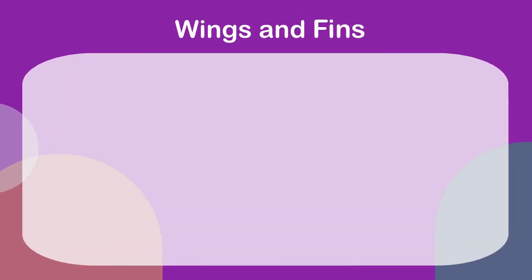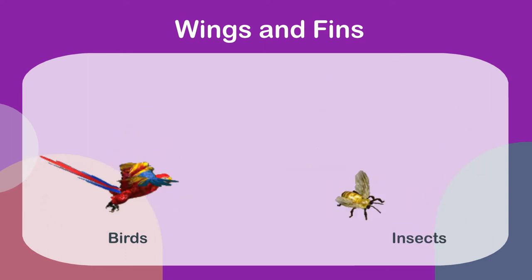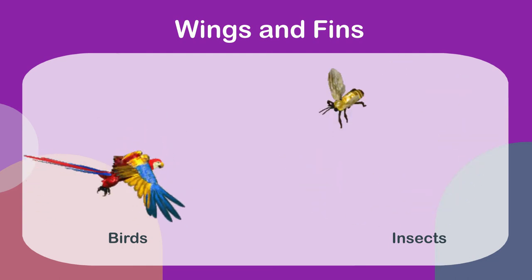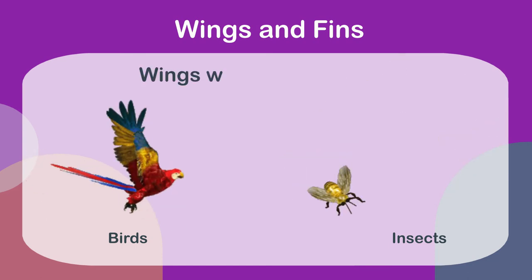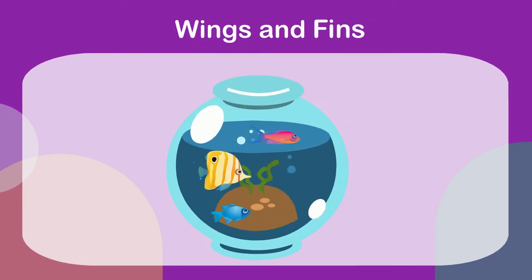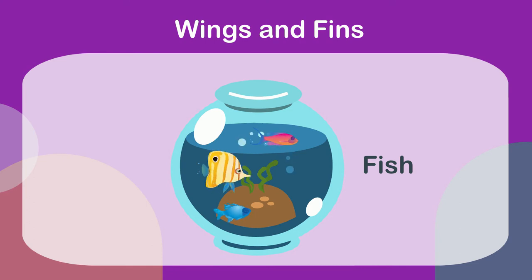Wings and fins: some animals like birds and insects have a pair of long arm-like structures known as wings, which help them fly. Some water animals like fish also have such structures known as fins, which help them swim in the water.